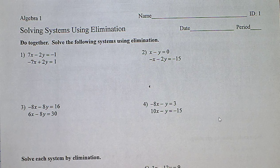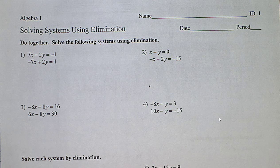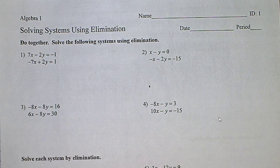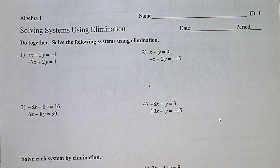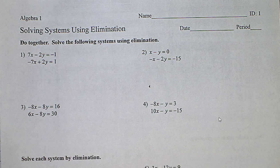Some of these you could add or subtract — some of them will be your choice. On number one, you have 7x and negative 7x, and then you have negative 2y and positive 2y. So you have a pair of opposites and another pair of opposites. Something interesting is going to happen to number 1. Since we've got opposites, do we add or subtract? Add. You just learned this five minutes ago and you're already applying it — that's awesome.